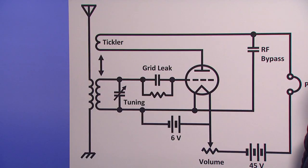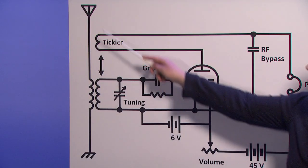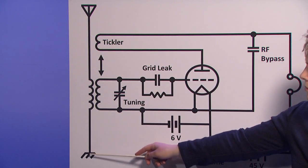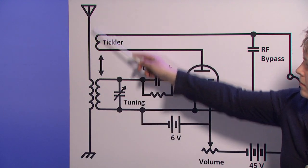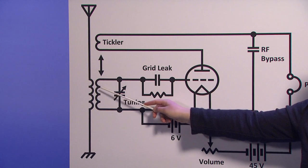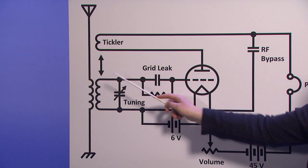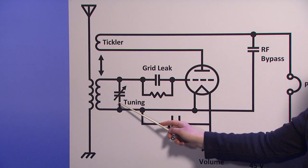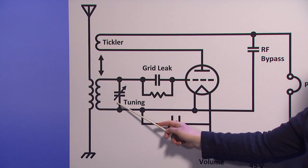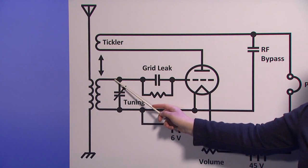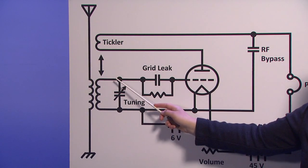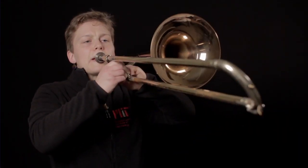Now let's understand how this circuit works. Radio waves induce waves of alternating current through the antenna. By the phenomenon of inductive coupling, the radio wave energy is picked up by this tuned circuit, which is just an inductor and a variable capacitor in parallel. This circuit acts like an echo chamber for radio waves. To get a better sense of how this parallel inductor and capacitor work, let's look at a system you may be more familiar with: brass instruments.